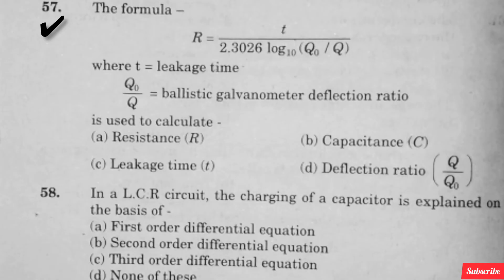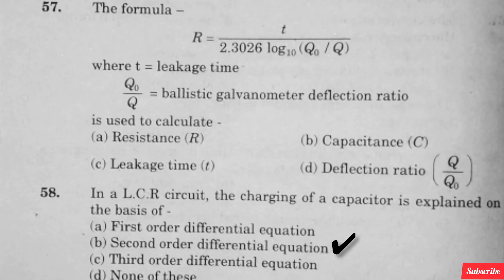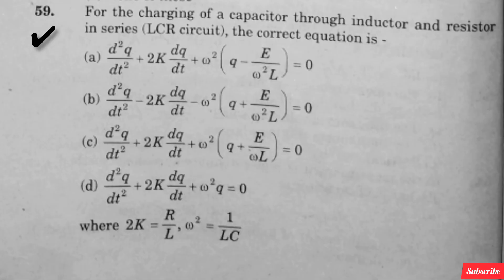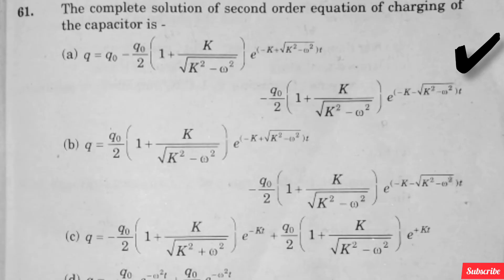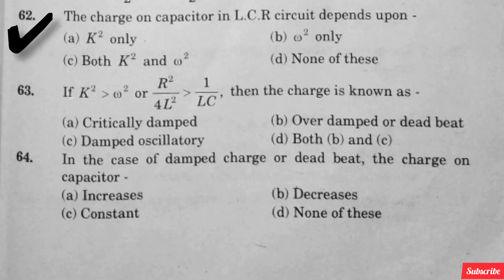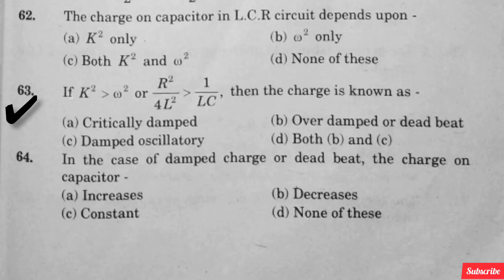The formula where T is leakage time and Q₀/Q is ballistic galvanometer deflection ratio is used to calculate — option A is right. In a LCR circuit, the charging of the capacitor is explained on the basis of — option B is right. For the charging of a capacitor through inductor and resistor in series LCR circuit, the correct option is — option A is right. The general solution of the second order equation of charging of the capacitor in LCR circuit is — option C is right. The complete solution of the second order equation of charging of the capacitor is — option A is right. The charge on capacitor in LCR circuit depends upon — option C is right. If K² > ω² (or R²/4L² > 1/LC), then the charge is known as — option B is right.